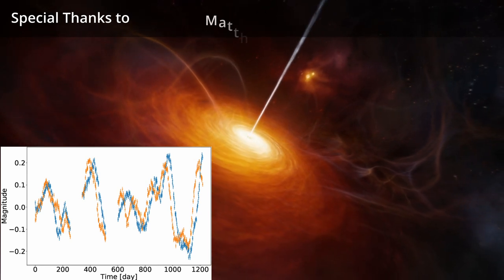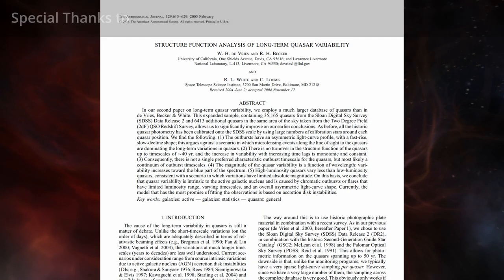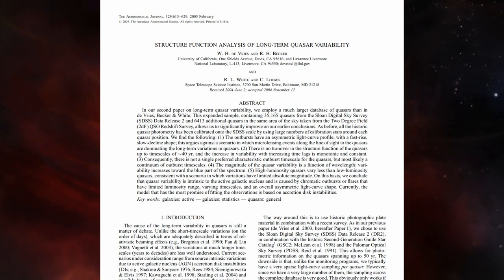The most popular parameterization to date has been the structure function and several groups have measured it for samples of light curves. The main drawback of this is that the points are independent of each other which causes error analysis and makes it very difficult to interpret.